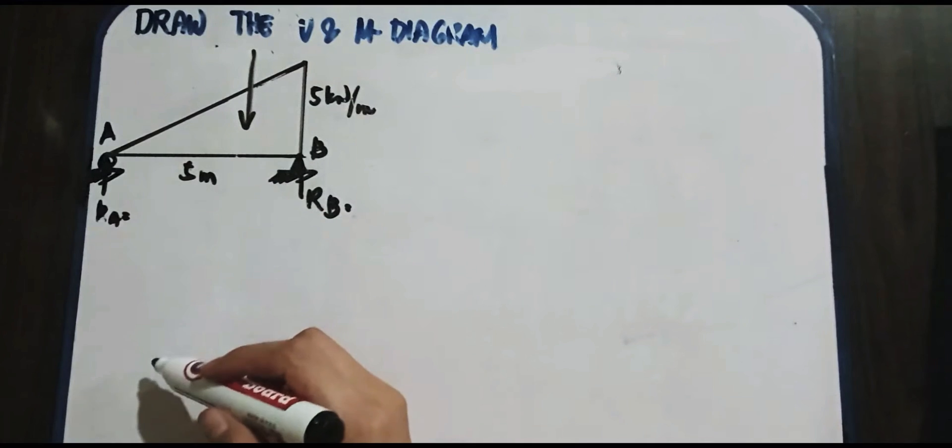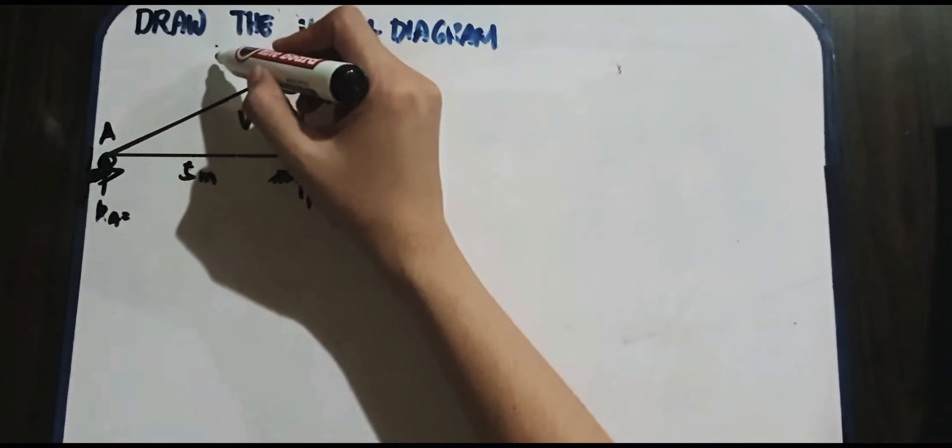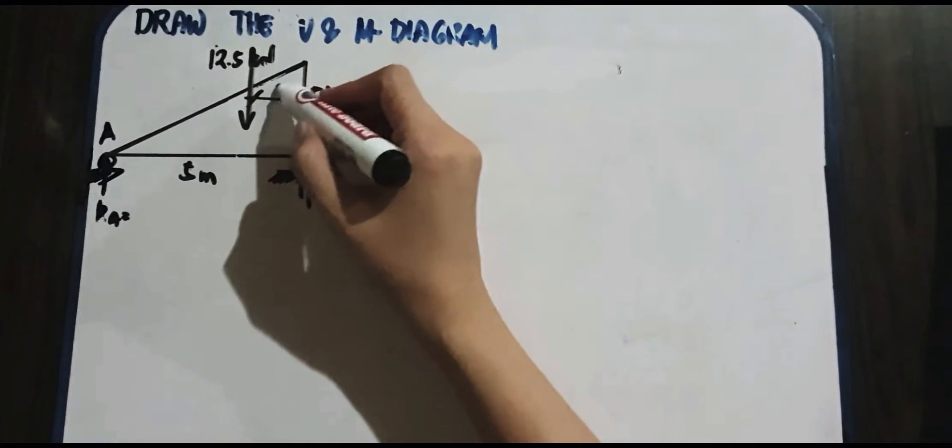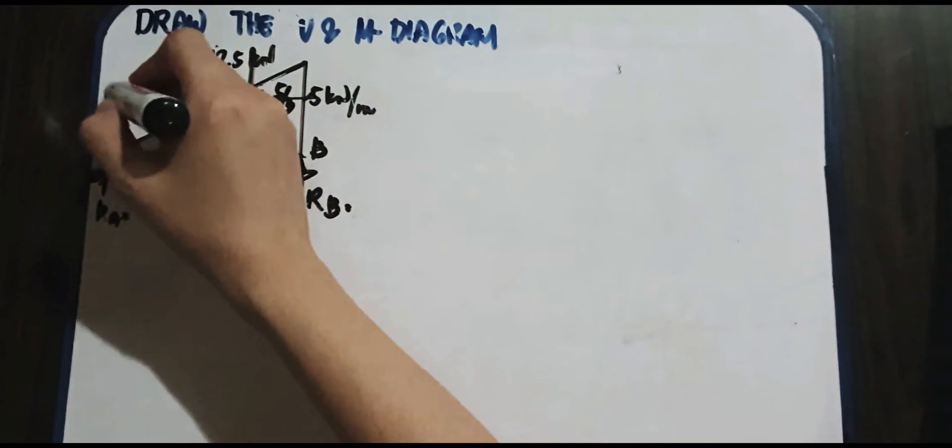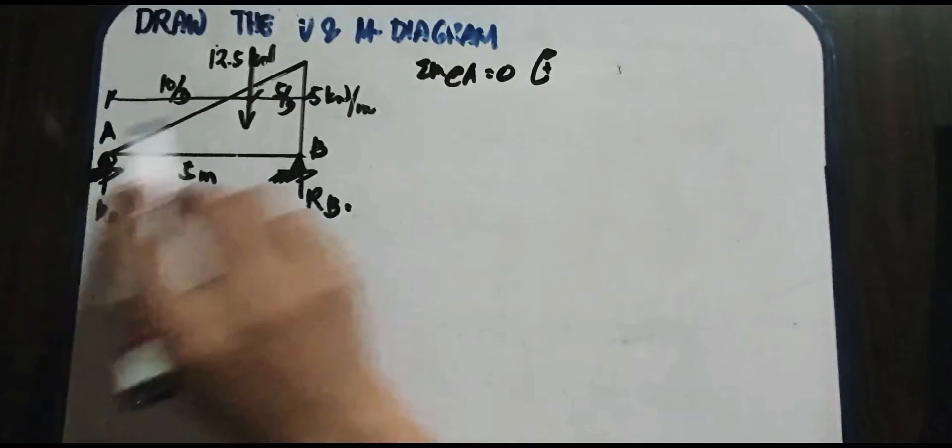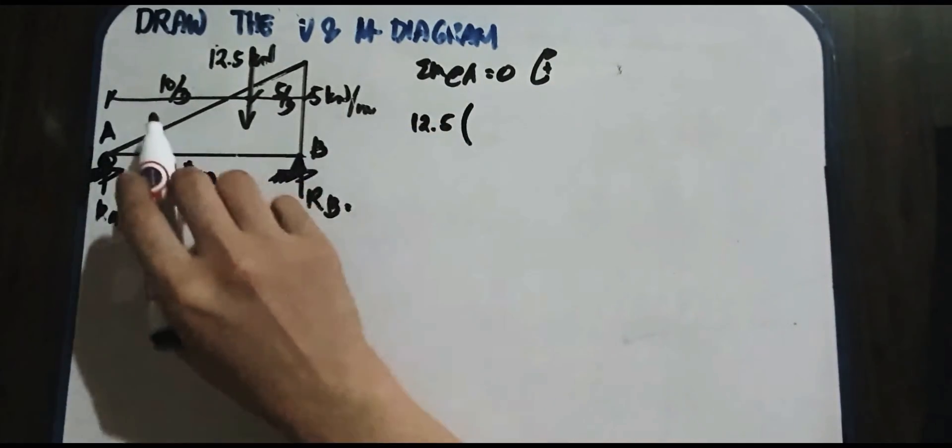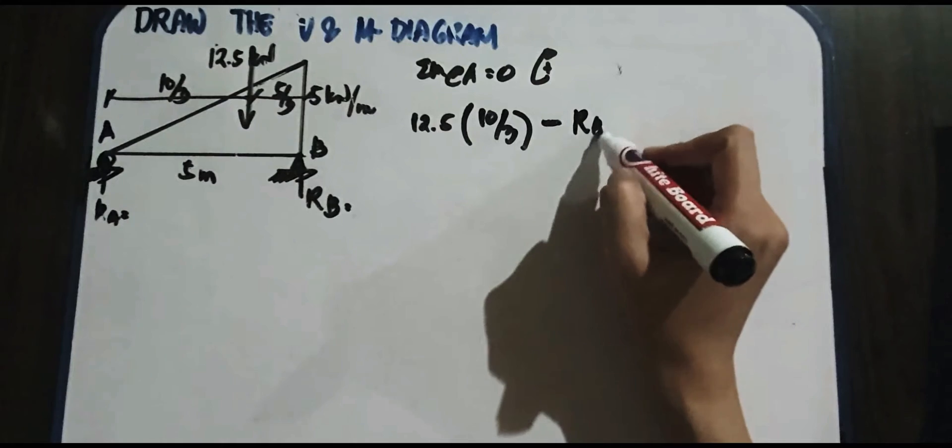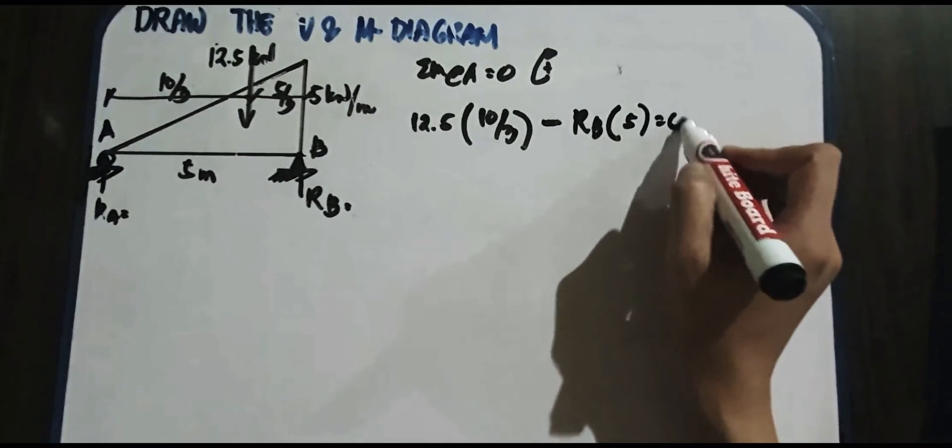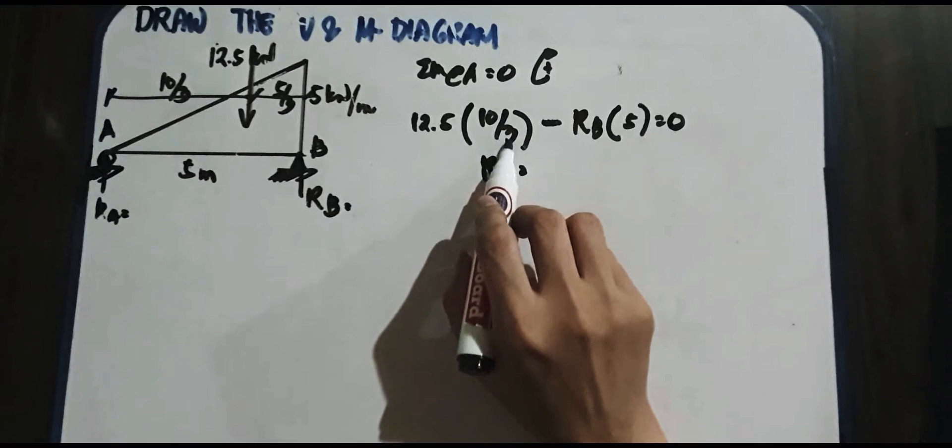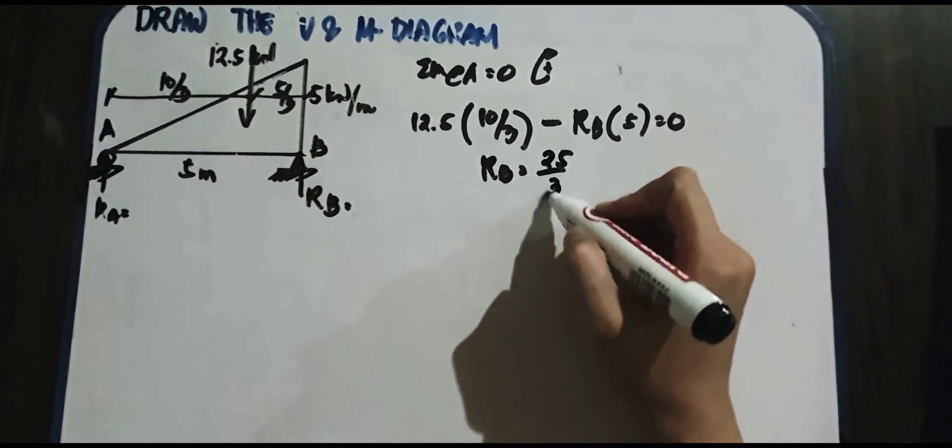So this is the resultant. We have 1 half base times height. So we have 1 half times 5 is 12.5 kN. As you can see, this is the 1 third of 5. So we have 5 over 3 and this is your 2 thirds of 5. So we have 10 over 3 for that distance. So we have summation moment at A is equal to 0 clockwise to be positive. So ito yung reference natin, ito yung base natin. So we have 12.5 multiplied by 10 over 3, minus, this is counterclockwise, R_B. Multiplied by 5 is equal to 0. So we have R_B is equal to 12.5 times 10 is 125 over 3 divided by 5. So that is 25 over 3 kN.